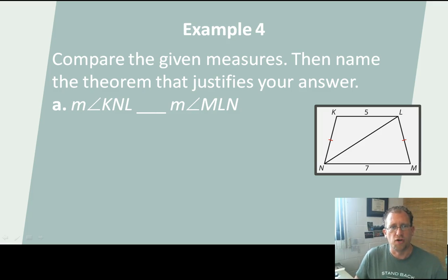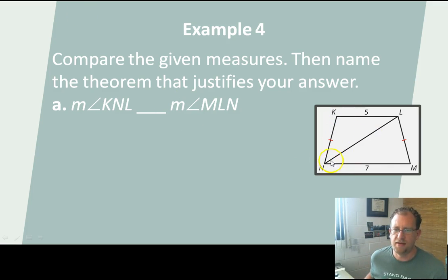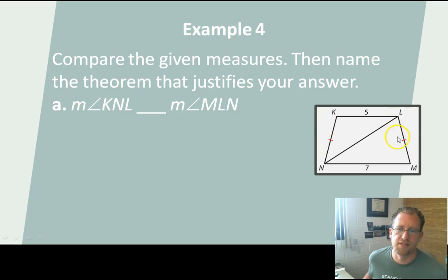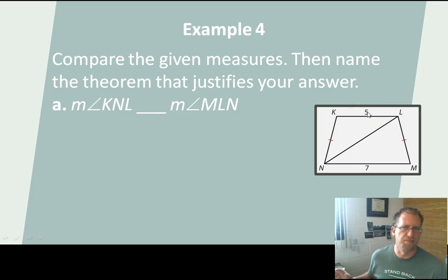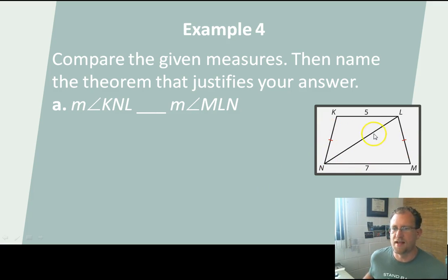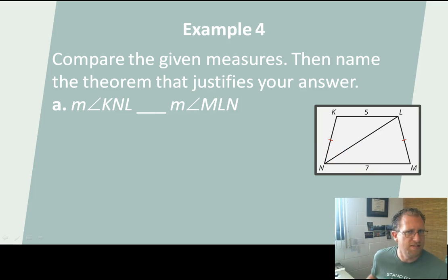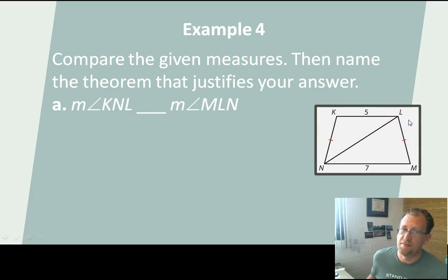Moving on — examples will help clarify things here. Compare the given measures, then name the theorem that justifies your answer. The measure of angle KNL — what is its relationship to the measure of angle MLN? So we're looking at this angle versus this angle. They're alternate interior angles, but not of parallel lines, so we can't say that they're the same. We have a trapezoid as the overall shape, and we can see that this side is less than this side — this is 7 and this is 5-something, so we don't have the unit. But because we know that this side is congruent to this side, marked that way in the diagram, and we know that this line segment is equal to itself by the reflexive property of equality, then we know that this triangle is comparable to this triangle.